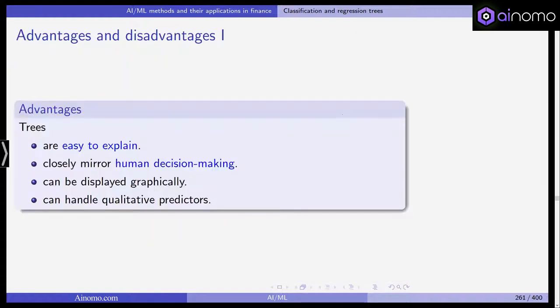Now what are the advantages of trees? They are easy to explain, I don't actually need any formula. They closely mirror human decision making. We are simply looking for boxes and doing our decisions, making our decisions based on cutoff points. Yeah, smoker, non-smoker, age, low age, high age. It can be displayed graphically and it can handle qualitative predictors very simply, smoker, non-smoker, one, zero.